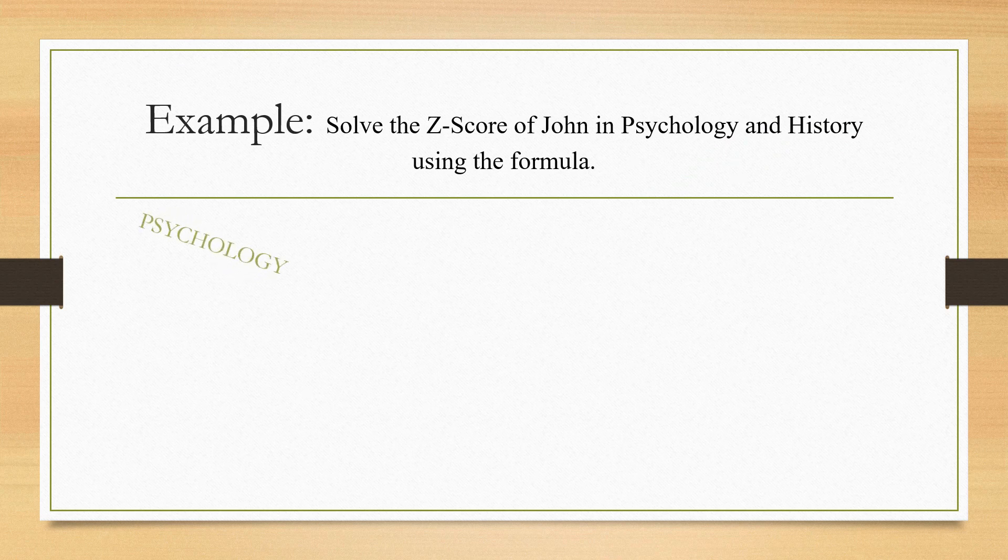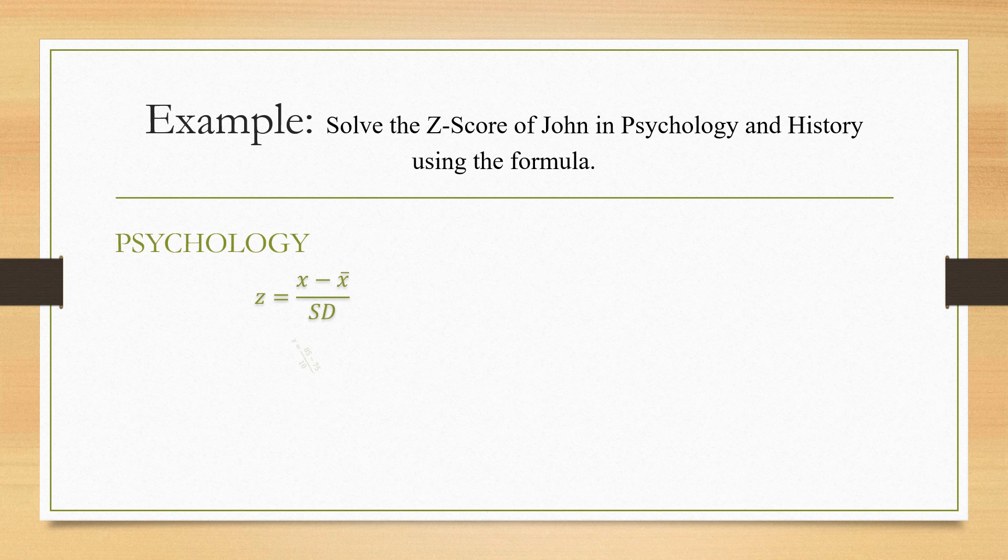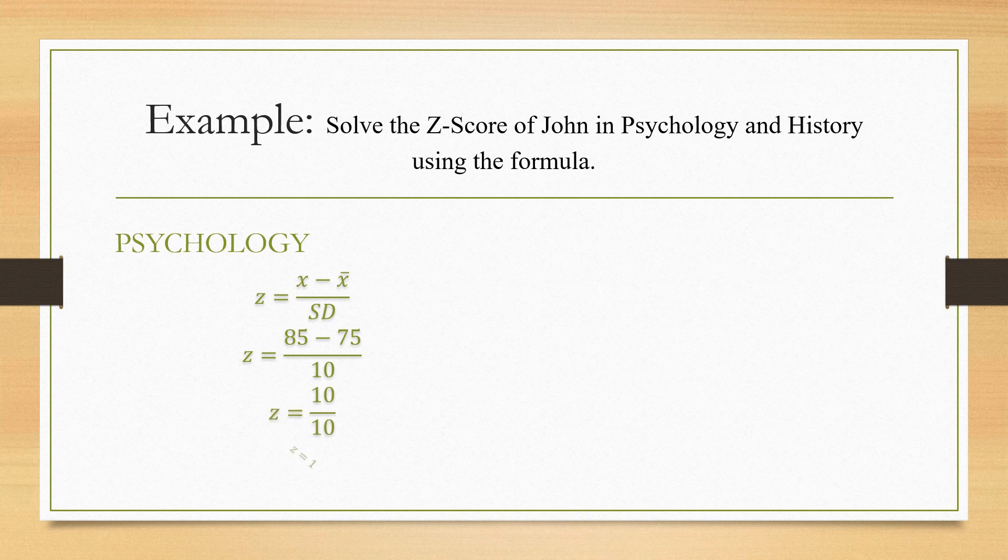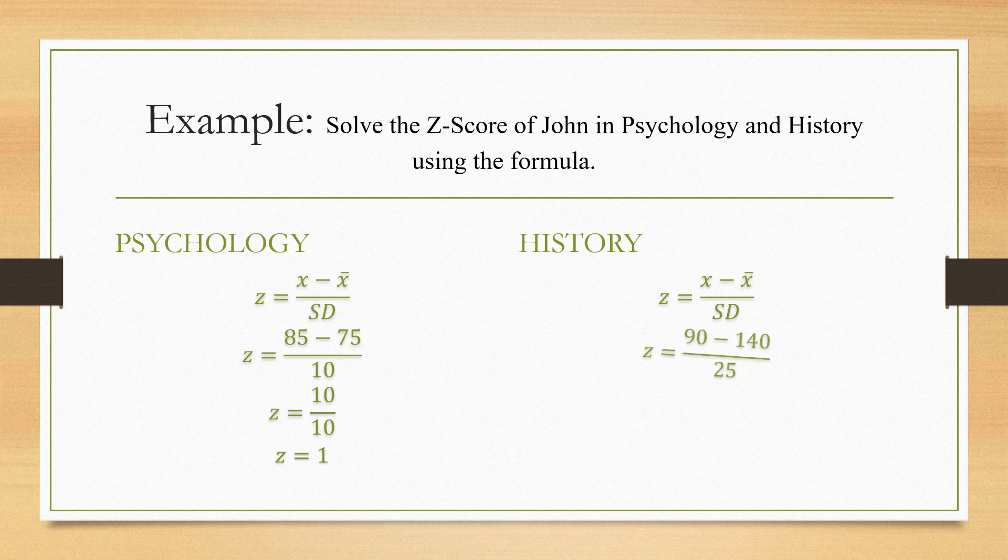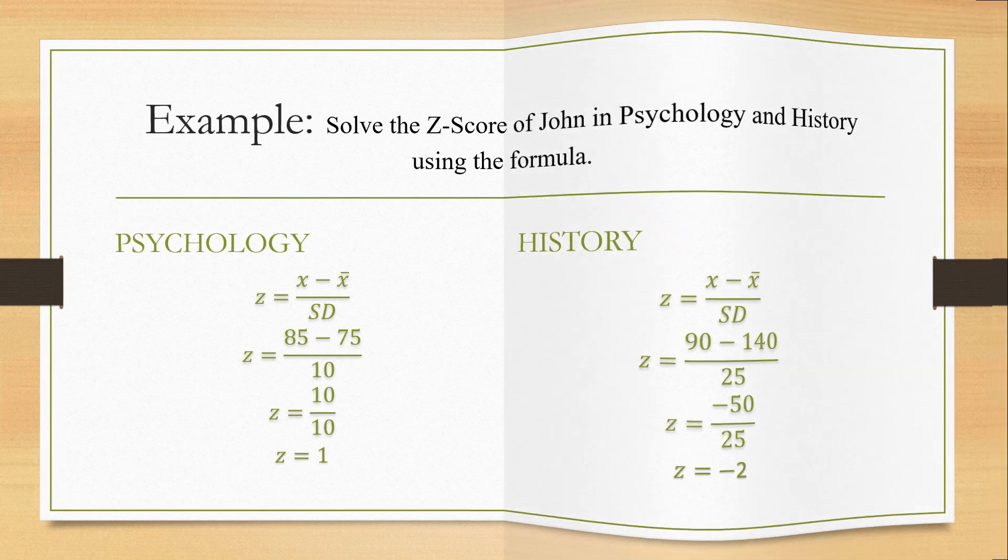And if we are to solve the Z-score in psychology and history using the formula, the result is this. In psychology, Z-score is equal to 1, which means 1 SD above the mean, and in history, Z-score is equal to negative 2, which means 2 SD below the mean. So now, we can surely say that Chan is performing better in psychology and not in history.